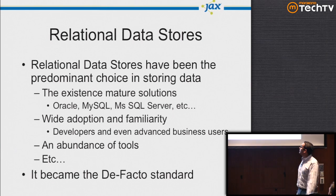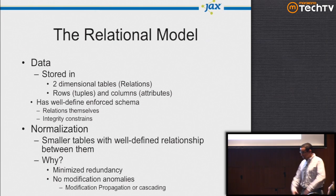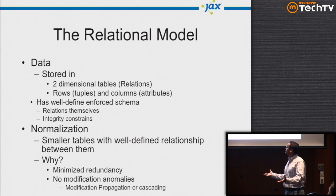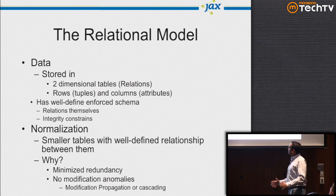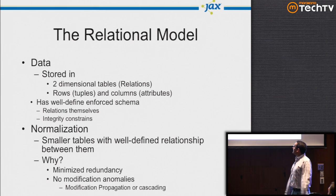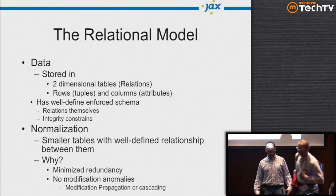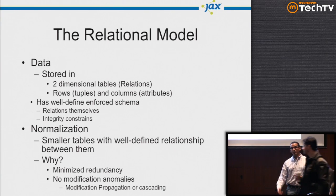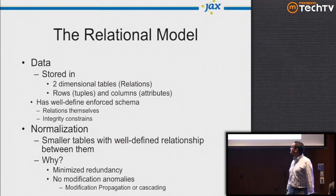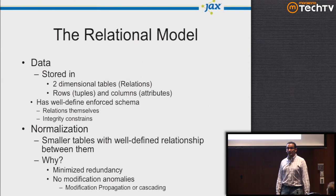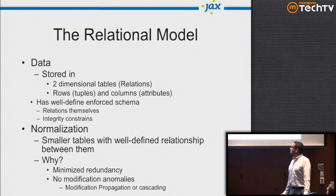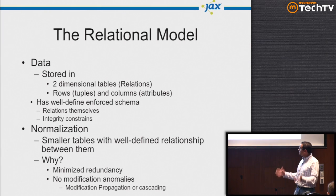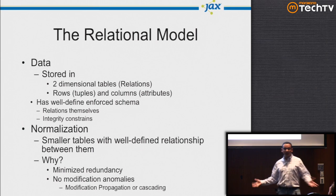The relational model stores data in two-dimensional tables — or relations — in the form of rows and column attributes, with a well-defined enforced schema. The relationship between data in those tables is well defined and enforced, with integrity constraints like data types and referential integrity. Normalization is a best practice: small tables with well-defined relationships to minimize redundancy and avoid modification anomalies, so no redundant data — that was considered a bad thing.